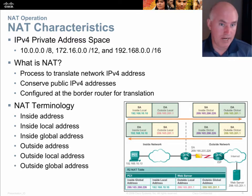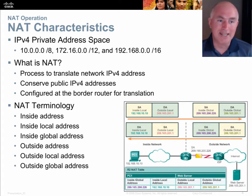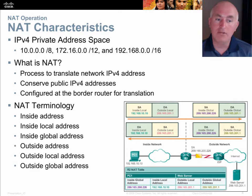NAT is configured at the edge of the network — typically the router that faces outward toward your internet service provider, or ISP. Some terminology you'll want to have in your notes would be: inside address, inside local address, inside global address, outside address, outside local address, and outside global.